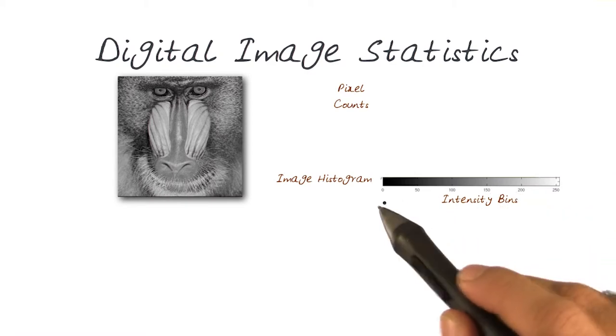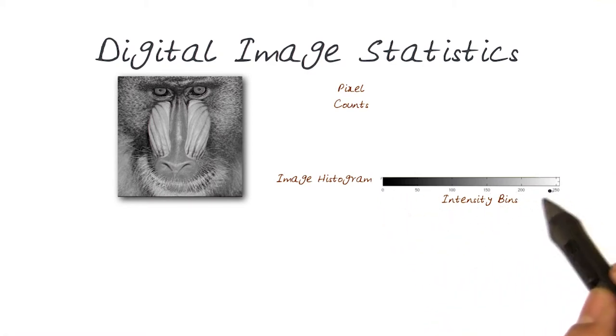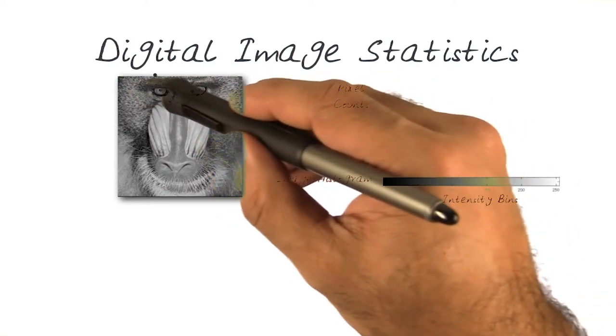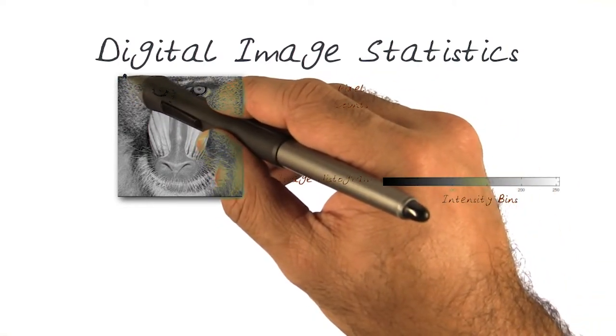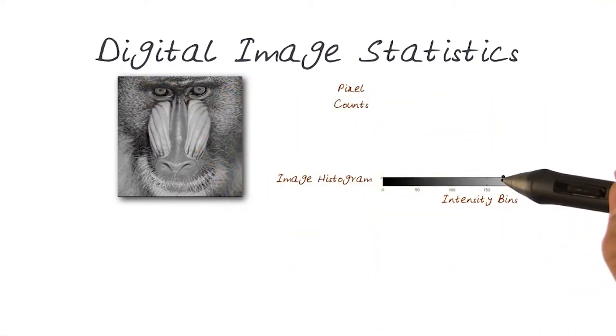Imagine I have created a bin with values from 0 to 255. Every time I scan through this image, I see an intensity value - let's say 120. I will put one there.